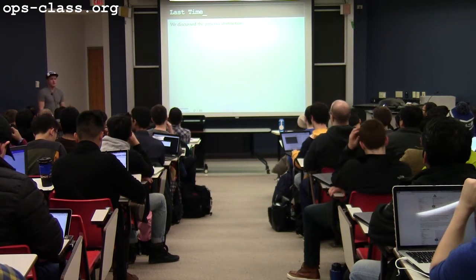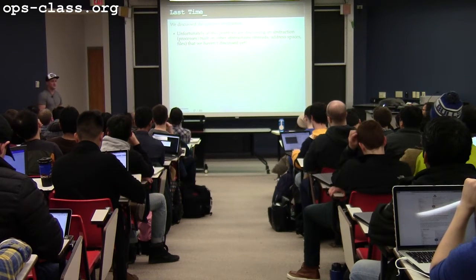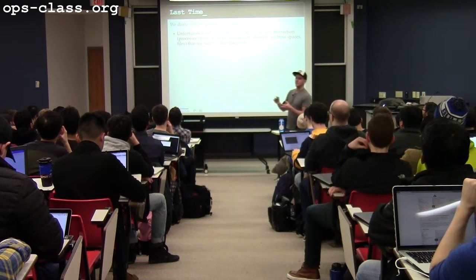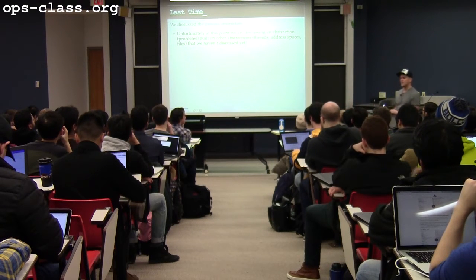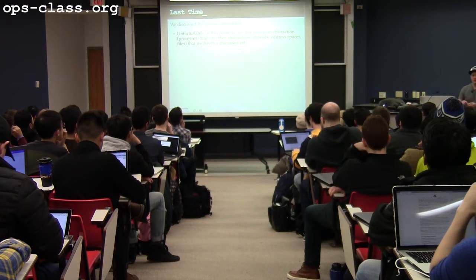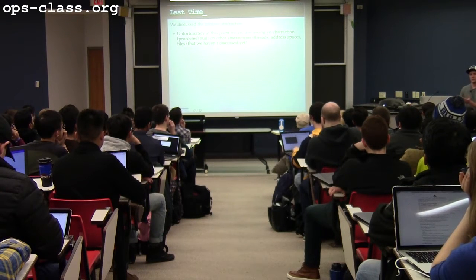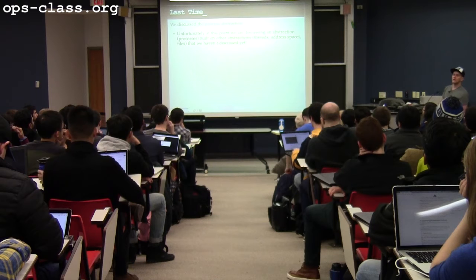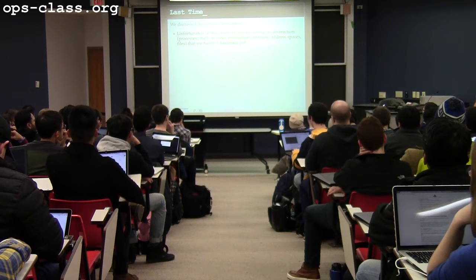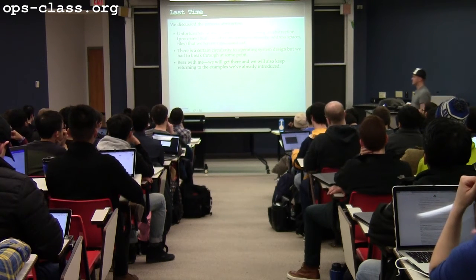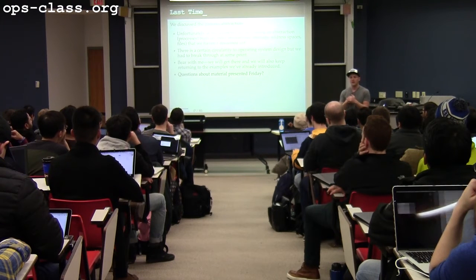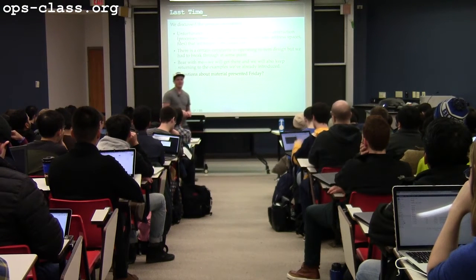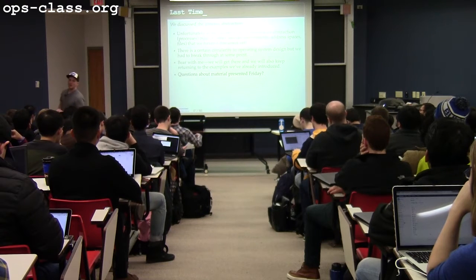Last time we started talking about the process abstraction. It's a little difficult to choose an entry point for a class like this because there's a circularity — processes incorporate other abstractions we haven't really covered yet. We talked about the things that a process contains: abstractions tied to other parts of the hardware, and we'll come back to these in the future. Any questions going back to Friday? We started talking about the concept of a process, what the process abstraction is, and we talked a little bit about IPC and how processes on the system can communicate with each other.